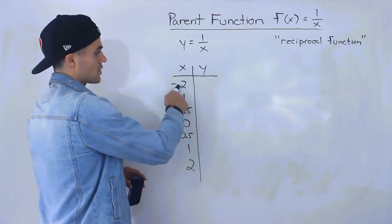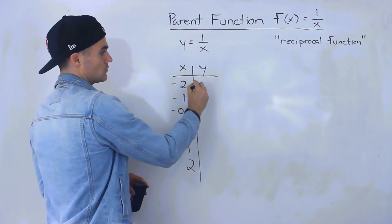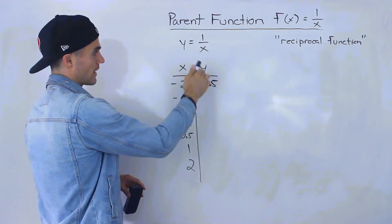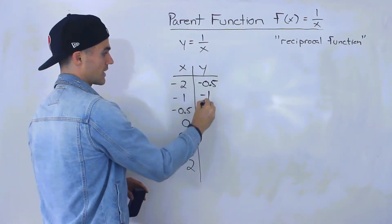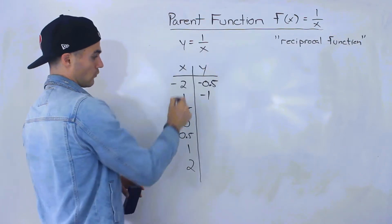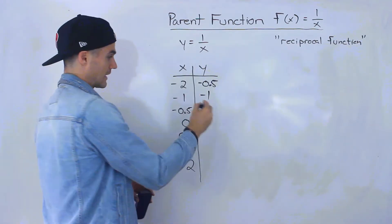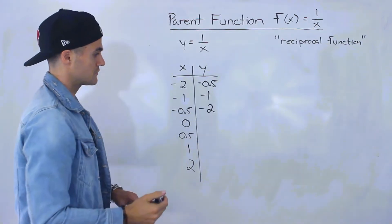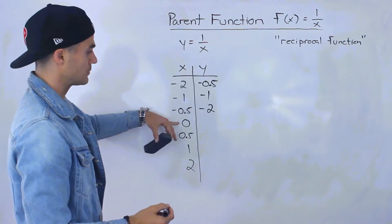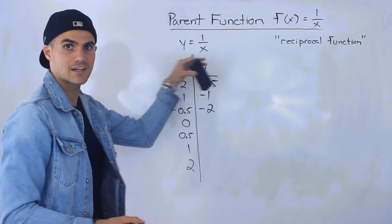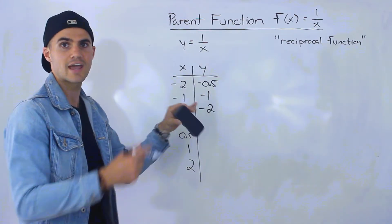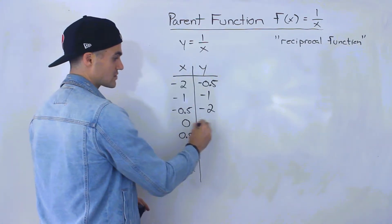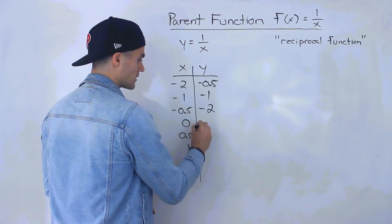Starting with negative 2, we'll have 1 over negative 2, which is negative 0.5. If we plug in negative 1 for x, 1 over negative 1 is just negative 1. 1 over negative 0.5 would give us negative 2 if you plug that into your calculator. And here's where stuff starts getting interesting. Notice if we plug in 0, you can't take a number and divide it by 0. It's going to be undefined.